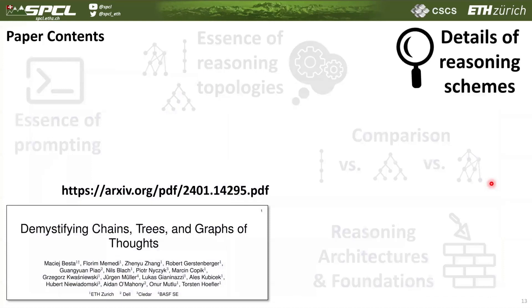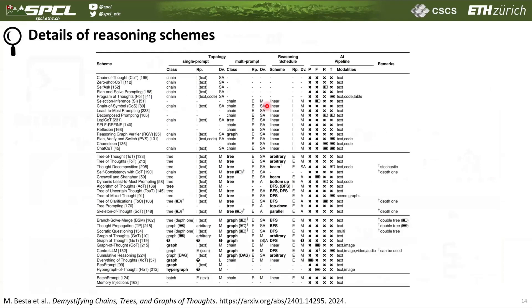We then continue with analyzing a few dozen of these schemes in the context of our blueprint. We list all these schemes on the left side of this table, analyze them in the context of how they fit in this blueprint, and then discuss their differences, different trade-offs, and other aspects.